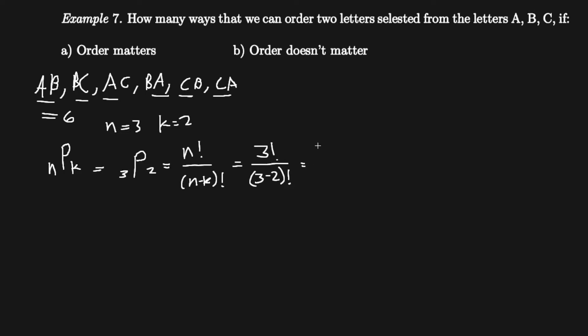We can do a little algebra: 3 factorial over 1 factorial equals 3 times 2 times 1, which equals 6. So that confirms our answer. We said n equals 3 because there are three letters to choose from, and k equals 2 because we are selecting two letters from the alphabet.